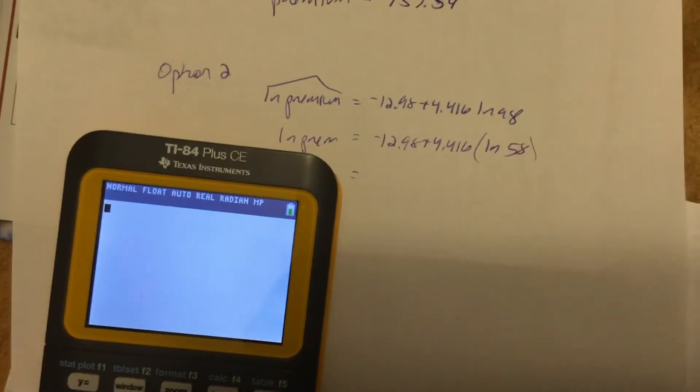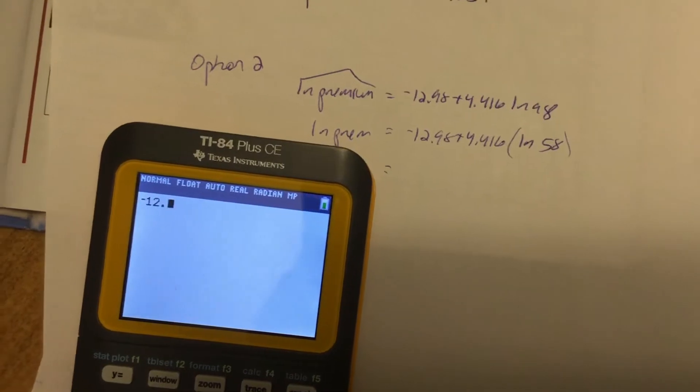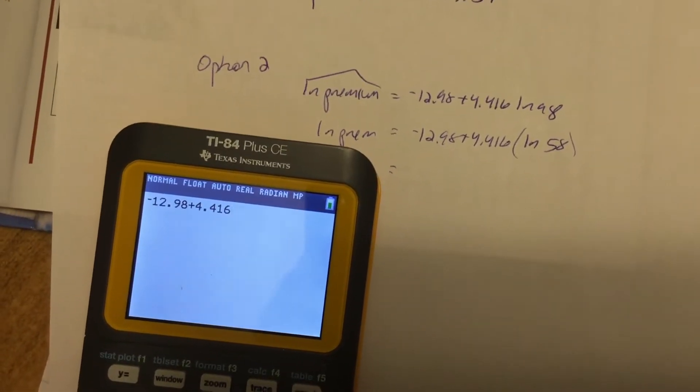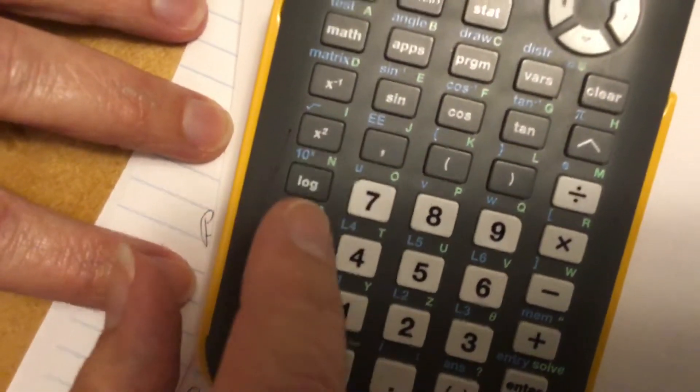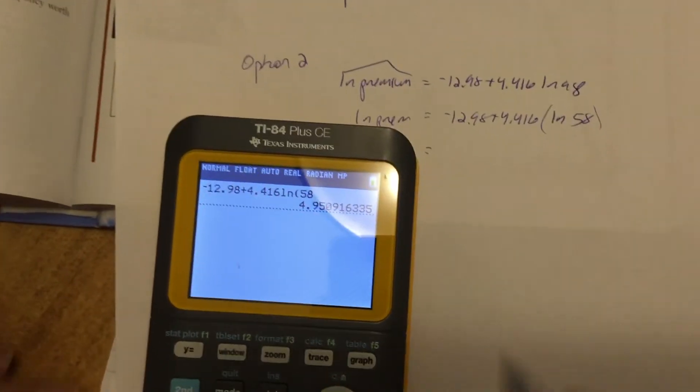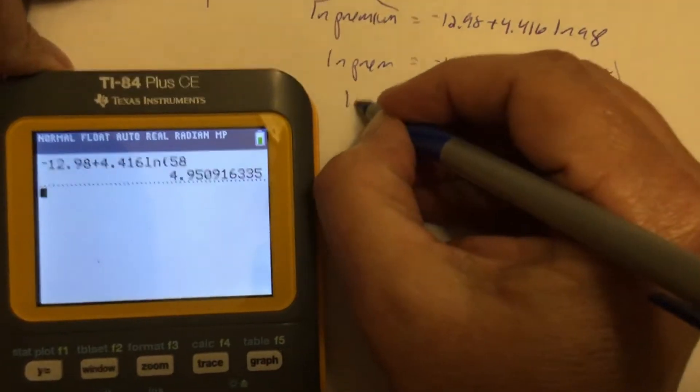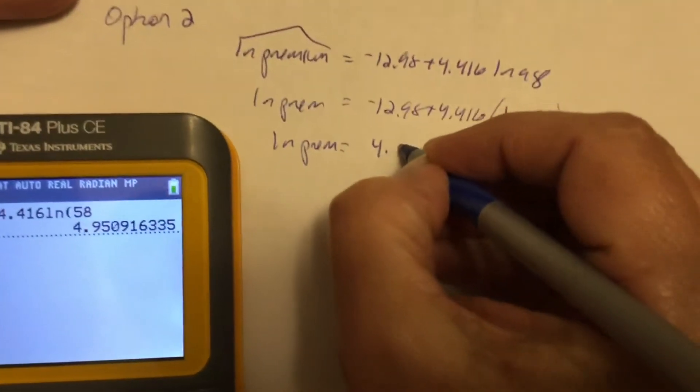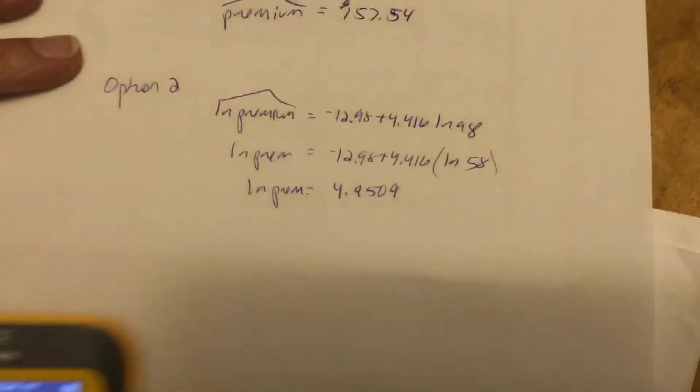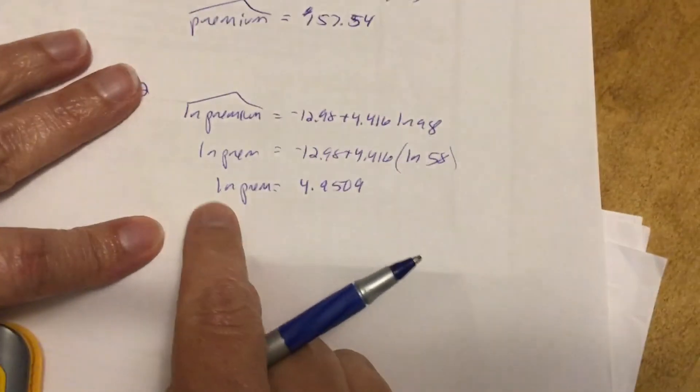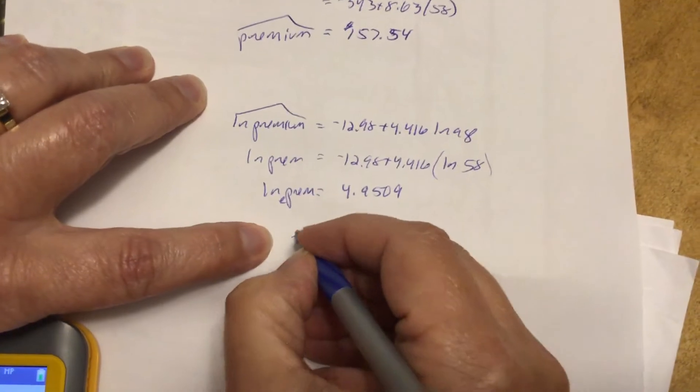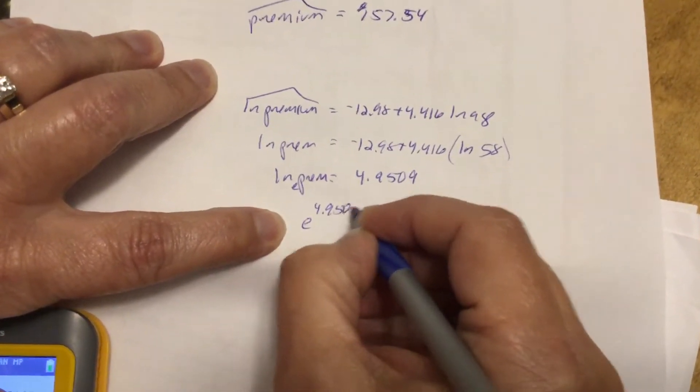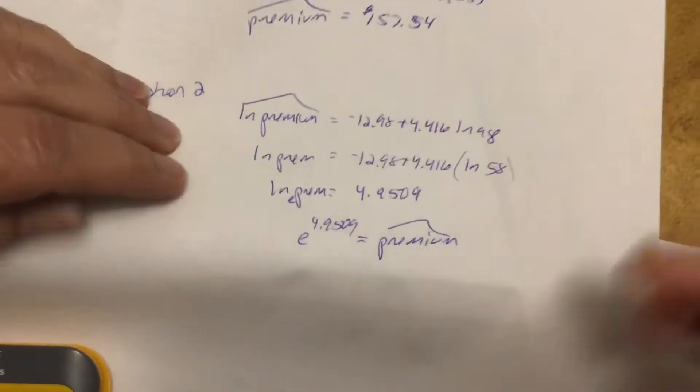We can put that whole thing in the calculator. So negative 12.98 plus 4.416, I have a natural log button, natural log of 58. And I get this value. So natural log of the premium, 4.9509. So to rewrite that natural log with a base of E as an exponential, to solve for premium, I would say E raised to the 4.9509 power equals my predicted premium. So then I can just stick in the calculator.